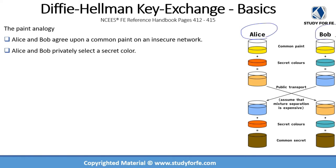There are two parties — Alice and Bob. In most cryptography texts, whenever we talk about encryption, the two names that pop up are Alice and Bob. Alice and Bob want to communicate. The first thing they must do to implement Diffie-Hellman key exchange is agree upon a common paint. Alice communicates to Bob over the network and tells him she is using yellow as the common paint. Even if someone eavesdrops and intercepts this, in the grand scheme of things it won't make any difference.